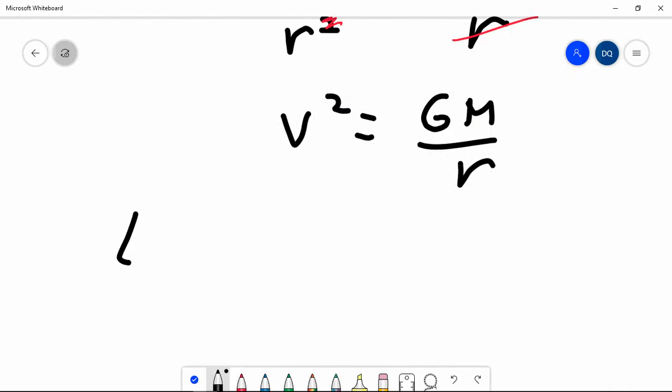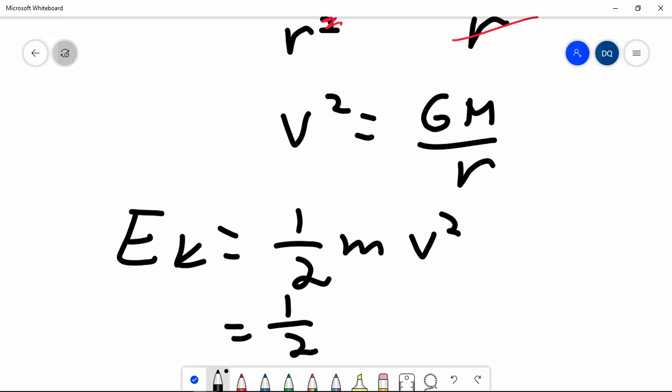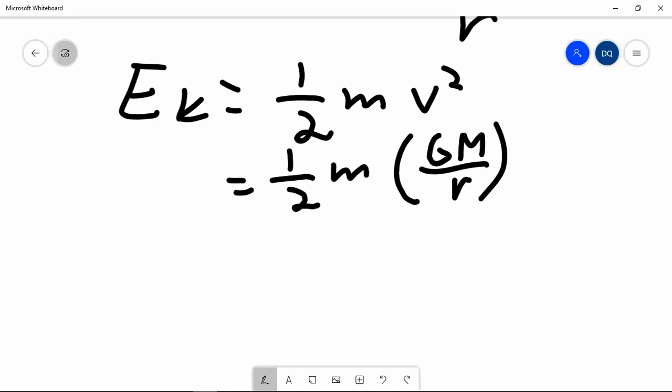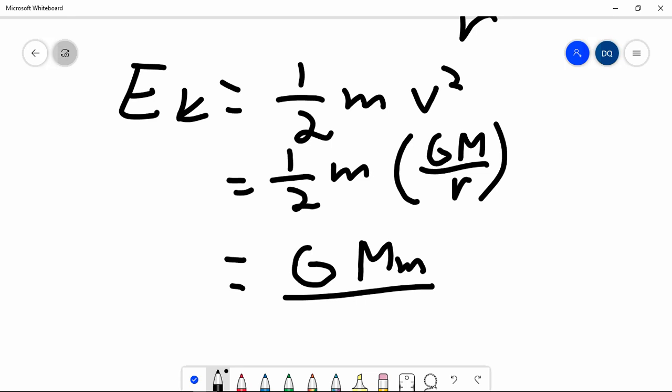So that means the kinetic energy that the Moon has is half its mass times the square of its speed. So that is half of its mass times the square of its speed is G capital M over R. So the kinetic energy that the Moon has as it goes around the Earth, if you just put all of this together, is GMM over 2R.